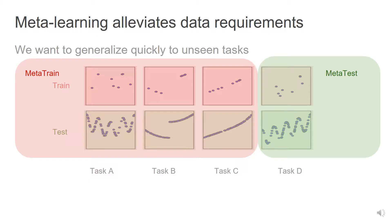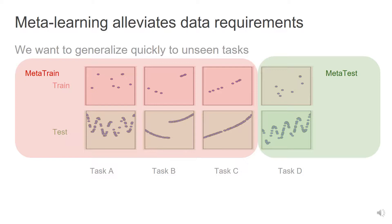Analogous to the usual train and test split, we partition our tasks into meta-train and meta-test. In the meta-train phase, we start with an untrained learning algorithm and, after training on many tasks, we learn a good learning algorithm for unseen tasks.